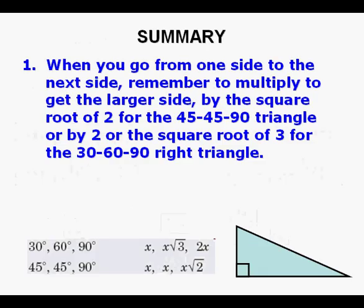To summarize, when you go from one side to the next side, remember to multiply to get the larger side. That's going to be by √2 for a 45-45-90 triangle. For a 30-60-90 triangle, you need to multiply by 2 or √3 to get those sides starting from the short side.